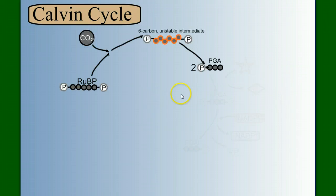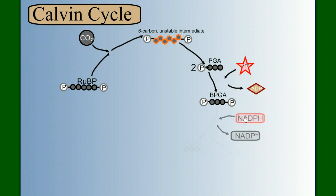So where are we now? We had PGA. We energized that PGA with ATP, which converts the PGA into BPGA. It adds a phosphate group. And then we bring in NADPH and convert the BPGA into PGAL.